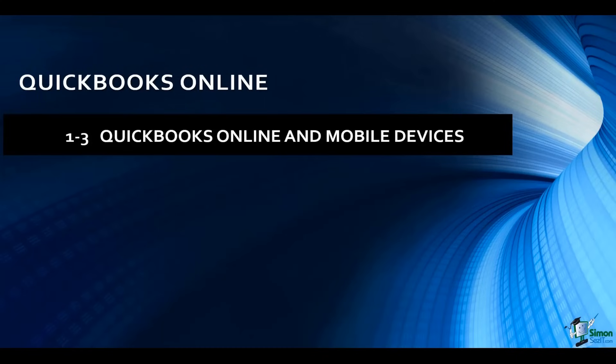Before wrapping up module one, I want to briefly talk about how mobile devices work with QuickBooks Online. The first thing to know is that your online version is constantly evolving. You might log in one time and be used to where a particular option is, and the next time you log in it may not be there at all or may look different. When they roll out changes, they do not roll them out across the board for everyone at the same time — that's why your friend may not see the same updates you see.